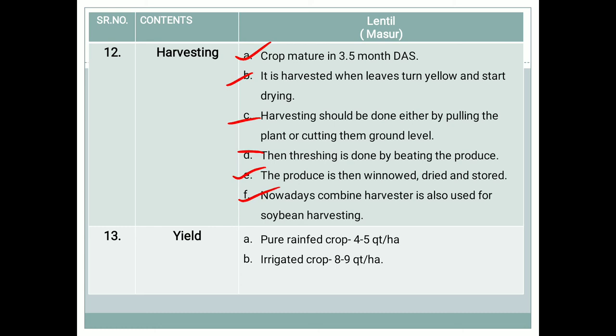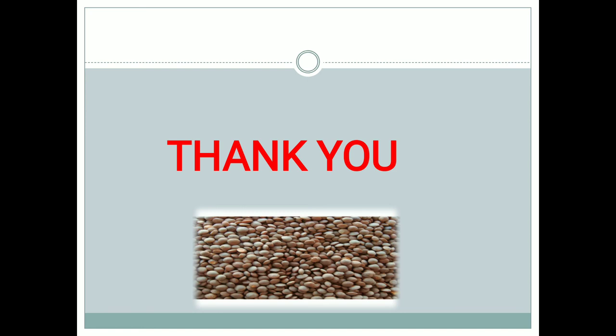Regarding yield: for a pure rain-fed crop, the yield should be between 4 to 5 quintals per hectare. For an irrigated crop, 8 to 9 quintals per hectare. This is all about the cultivation of lentil crop.